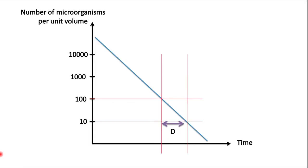To obtain the required parameters for processing, we can convert the y-axis into a log scale. In that case, we will get a straight line. Here you can see the time required for one log cycle reduction, which is called the D-value.